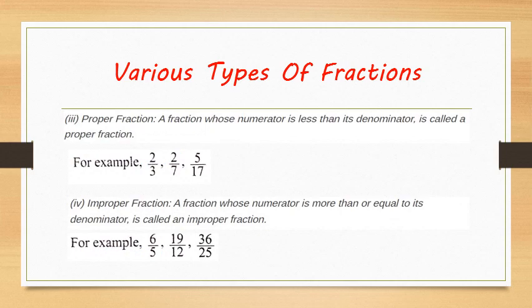Proper fraction: a fraction whose numerator is less than its denominator is called a proper fraction. For example, 2 by 3, 2 by 7, 5 by 17 — all these are proper fractions, because in every case the numerator is smaller than the denominator.